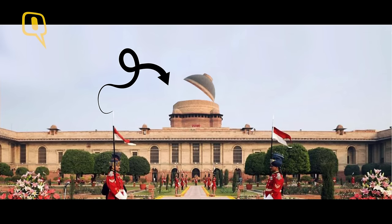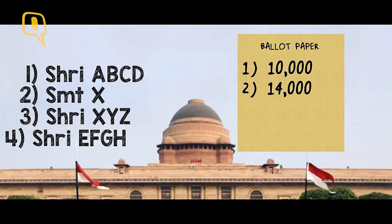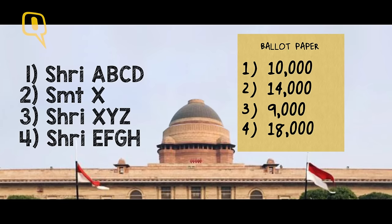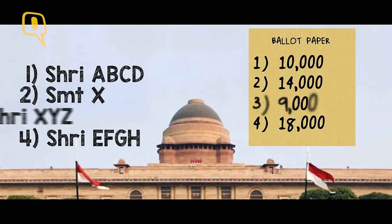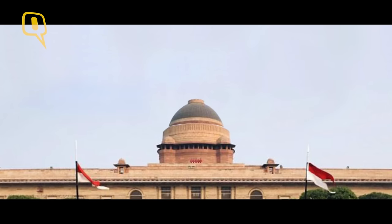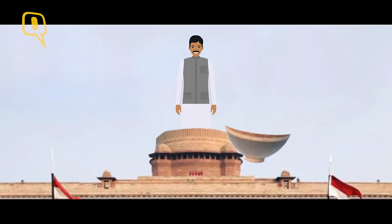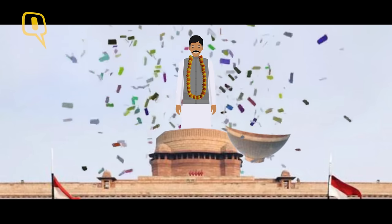How is the voting done? Suppose this is the official ballot and there are 4 presidential candidates. Each MP and MLA ranks them in order of preference: 1, 2, 3, 4. If a candidate gets 50% of the votes plus 1, then we have a president. Otherwise, the candidate with the lowest number of votes drops out and the remaining ballots are recalculated on the basis of the second preference. This is done till a candidate gets 50% of the votes plus 1. This is how India gets its president. Can you believe that this happens every 5 years?